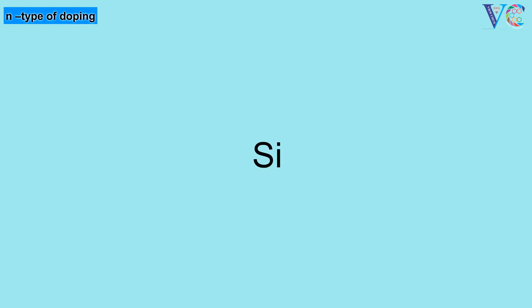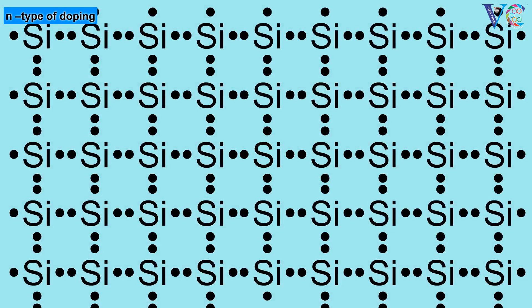N-Type of Doping. Silicon belongs to 4a group. It has 4 valence electrons. Each silicon atom bonds to 4 more silicon atoms.